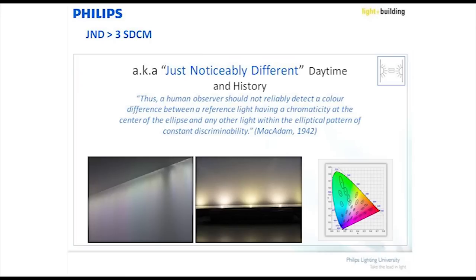One MacAdam step is really close together — almost the same color point on the chromaticity diagram. Two is a little further, three further still, then five, six, seven, and so on. He found that the majority of people will not see a difference between one light source and another when you stay within a three-step MacAdam ellipse.